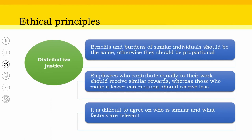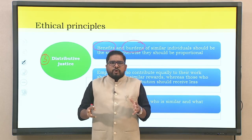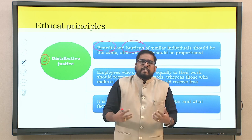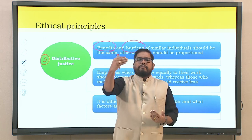The third important ethical principle is distributive justice. When looking at distributive justice, there are two important things: benefits and burdens. Benefits and burdens of similar individuals should be the same, otherwise they should be proportional — everybody should receive equal treatment. There are organizations where some individuals who do not work as hard or are not as proficient are still paid or rewarded more. This is the barrier of distributive justice.